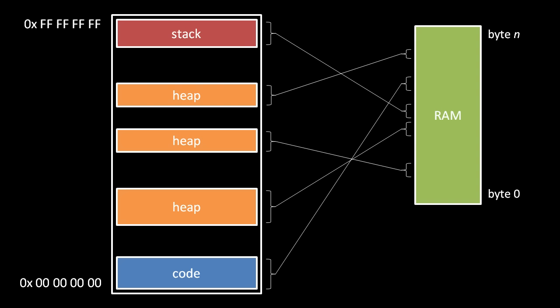When the OS runs a process, it lists these address mappings in a table, and as the process runs, the CPU consults this table to translate from process addresses to addresses of actual RAM.